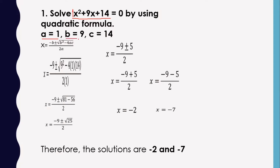Next, the value of b is 9, which is the linear term or the middle term of the quadratic equation. Then, the constant term, which is positive 14, is c. Then substitute the given values of a, which is 1; b, which is 9; and c, which is 14, into the quadratic formula.